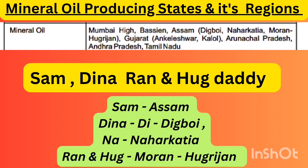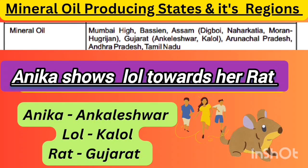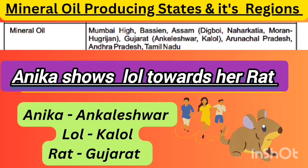This shortcut is also for mineral oil. 'Sam' represents Assam. In that, 'Di' represents Digboi, 'Na' represents Naharkatiya. In 'Ran' — R-A-N represents Moran, and 'Hug' represents the Moran-Hugrijan region of Assam.